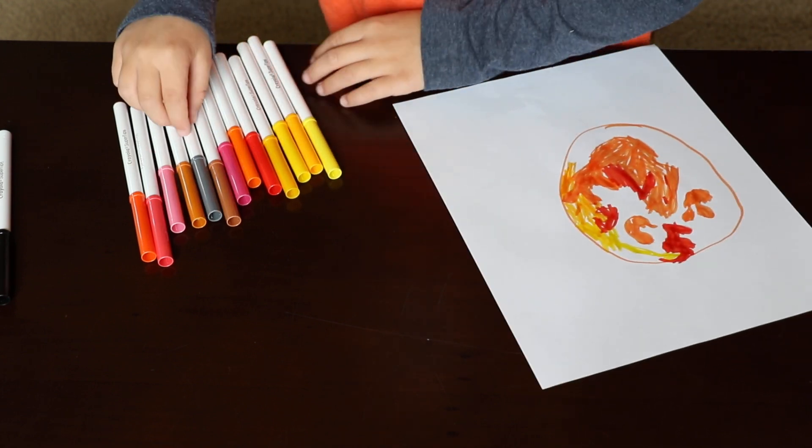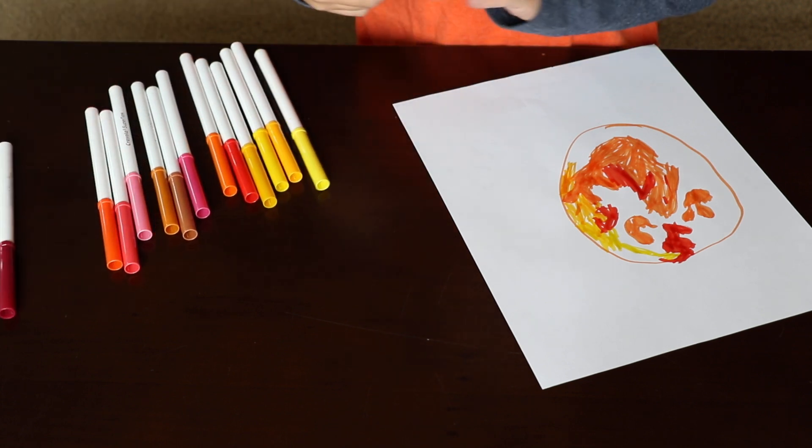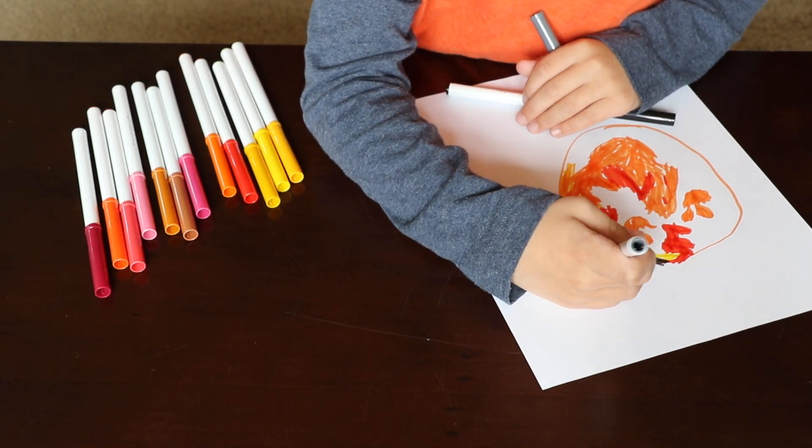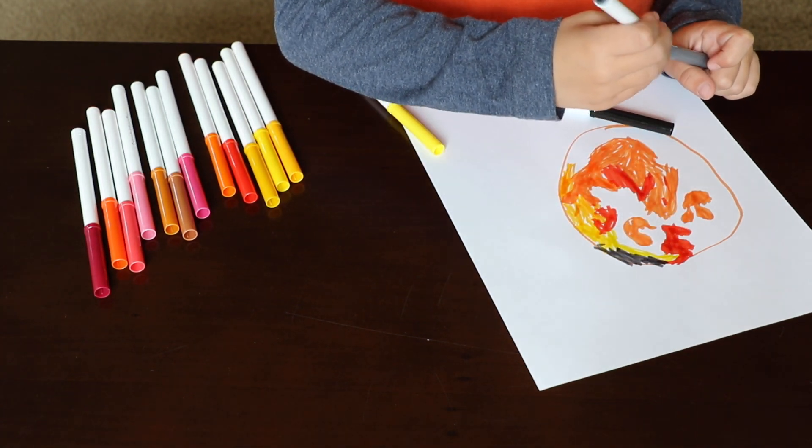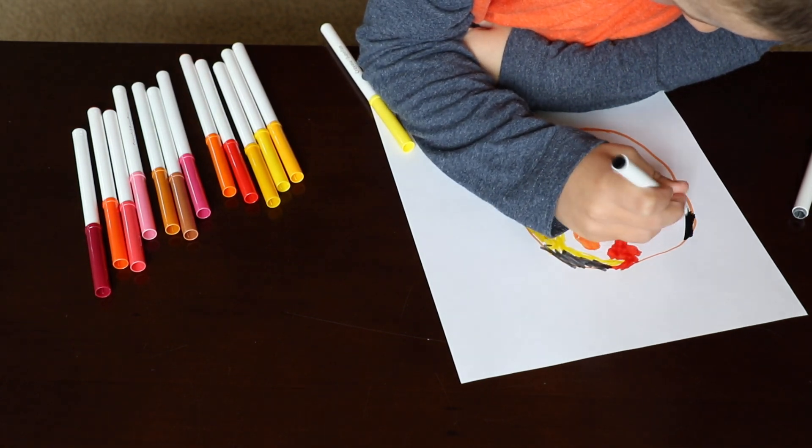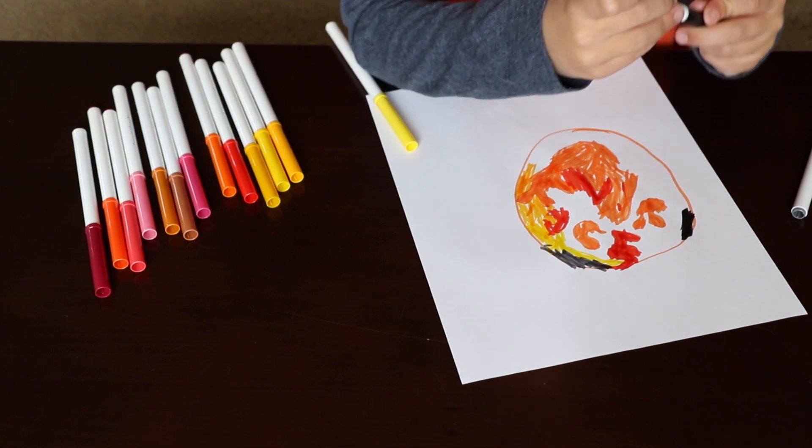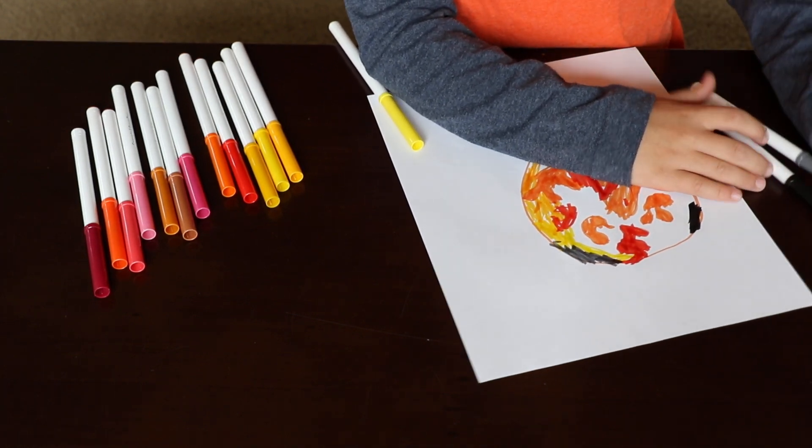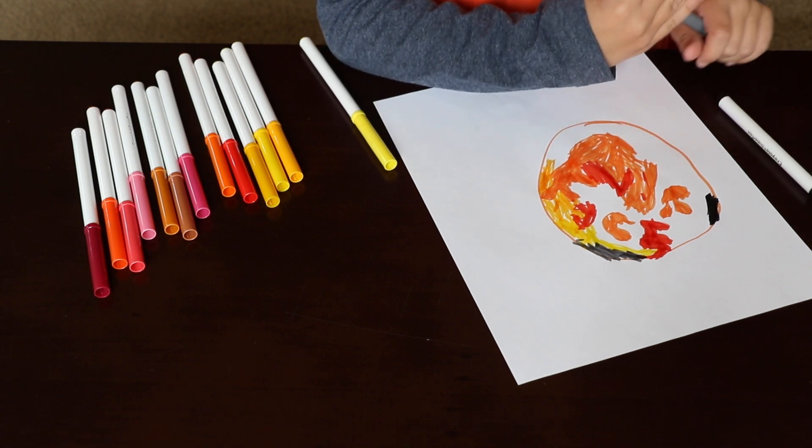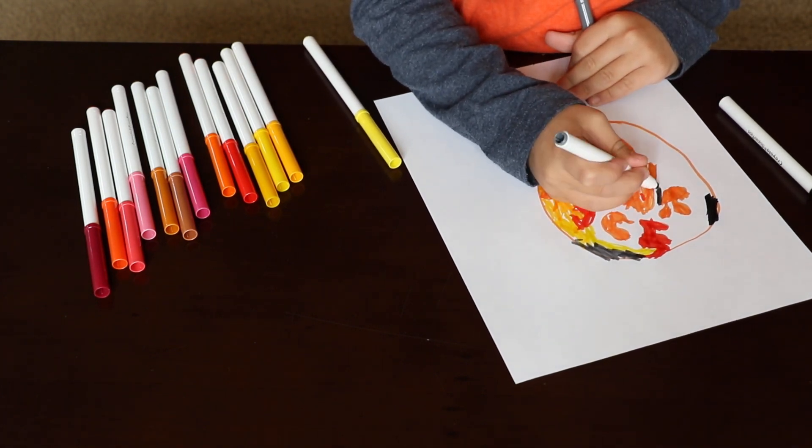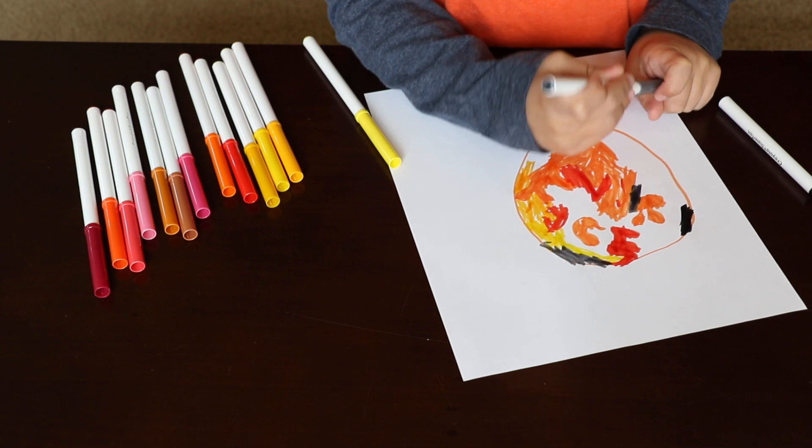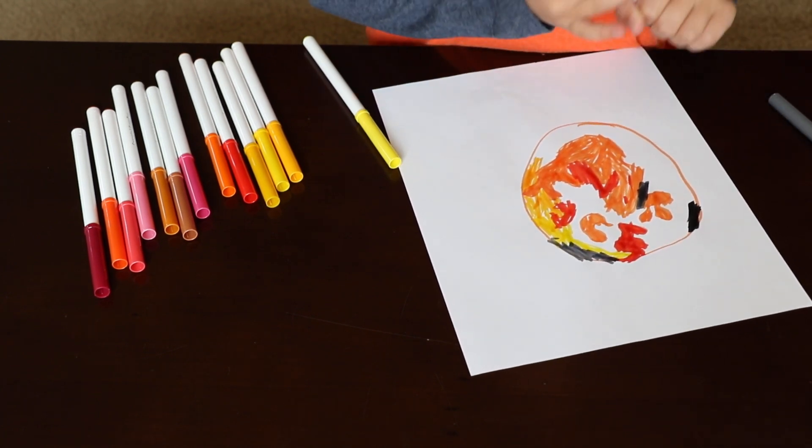Now I'm going to make a few sunspots with black and gray. Sunspots are small things that may be bigger than the Earth. They're cooler than the sun but still pretty hot.